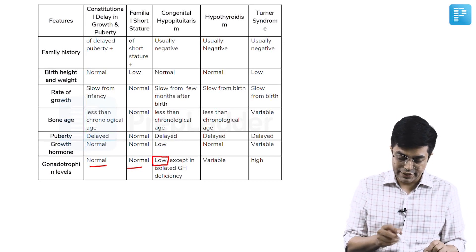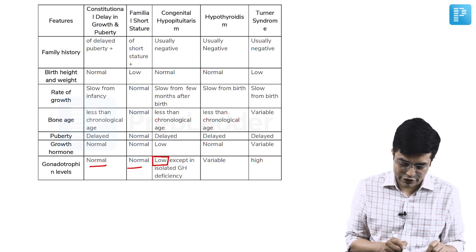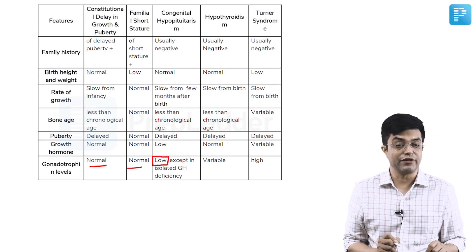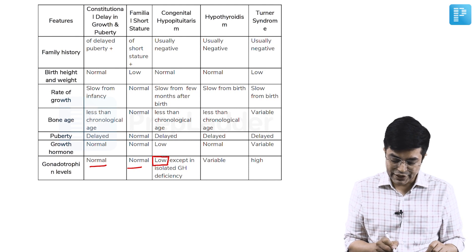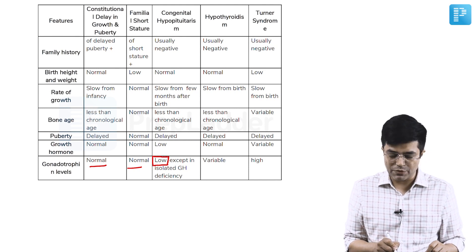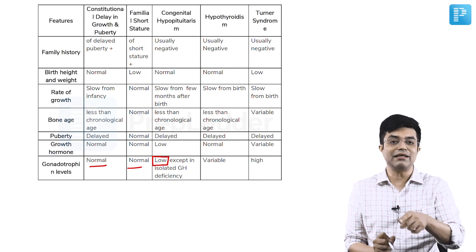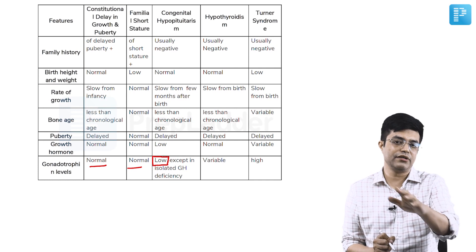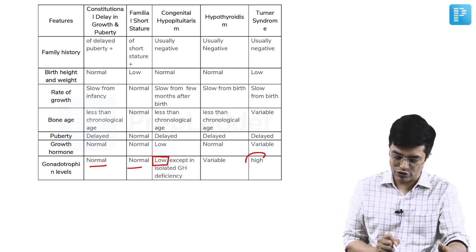Serum gonadotropin levels: in constitutional delay in growth, it will be normal. In familial short-stature, it will be normal. It will be low in congenital hypopituitarism, except isolated growth hormone deficiency where the gonadotropins are not affected.